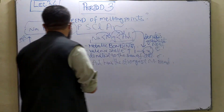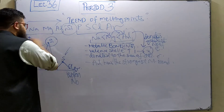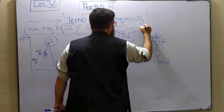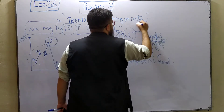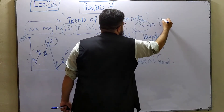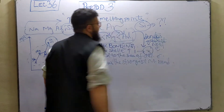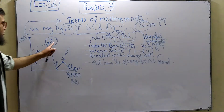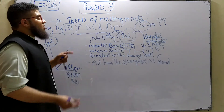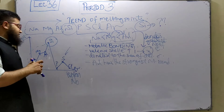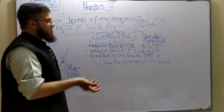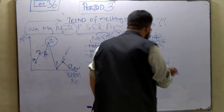After aluminum comes silicon. Sometimes the examiner asks: why does silicon have the highest melting point — not just above aluminum, but the highest of all, above all the non-metals and metals? Why is that so?